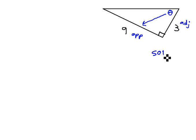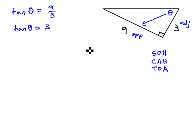And if I think about SOH CAH TOA, which one uses opposite and adjacent? The tangent does. So we can take the tangent of that angle theta is opposite over adjacent, 9 over 3, which if we divide, 9 over 3 is 3.